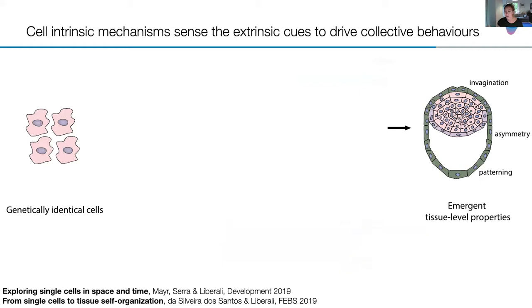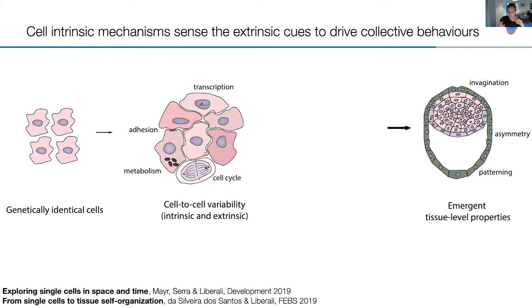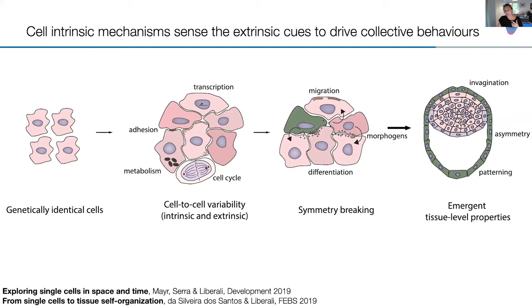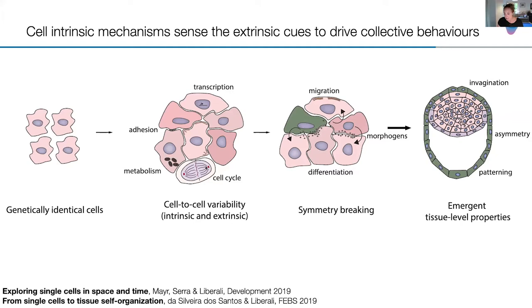This goes through the formation of cell-to-cell variability in a population of cells. Some cells have slightly different metabolic state, different amounts of receptor, different cell cycle stages — this gives individual cells a higher probability to differentiate. You can regulate cell-to-cell variability, and regulating heterogeneity at the population level allows you to control the subpopulation that will differentiate. This is what we call symmetry breaking — starting from genetically identical cells that drive the formation of a niche.